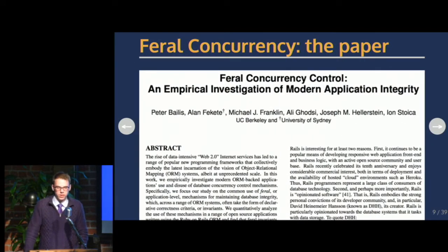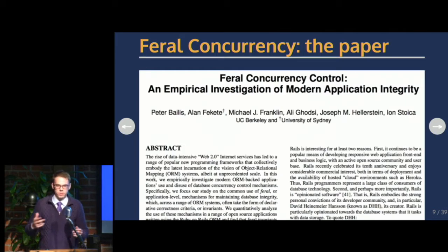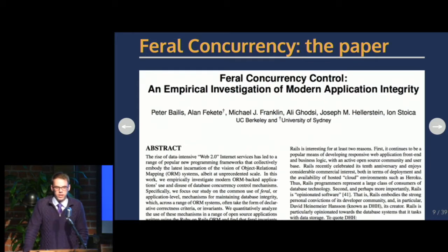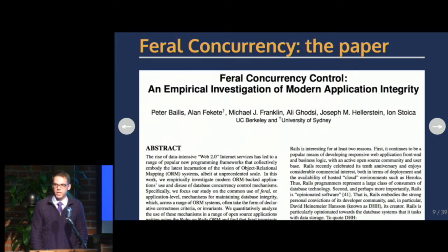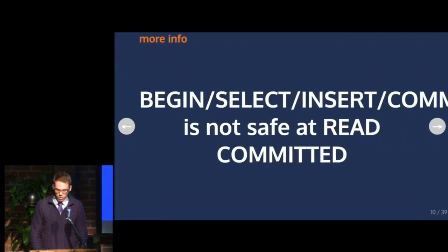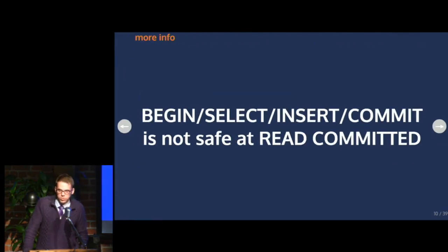The how of this and the discovery was the focus of the paper. The five people who wrote the paper are database experts — academic people looking at it from a database perspective — asking how well web applications are using the tools built for managing concurrency and writing data consistently. They focused on Rails applications. The how is that the four-query loop used in Rails — begin, select, insert, commit — is not safe at the read committed database isolation level.